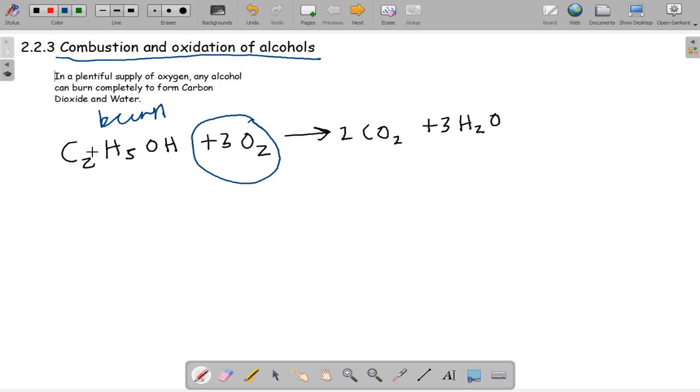We're going to talk about the oxidation of more complex alcohols and how oxidizing agents like potassium dichromate and sulphuric acid can form aldehydes and water.